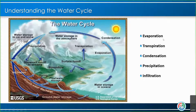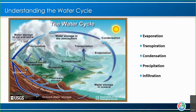Oftentimes you'll hear evaporation and transpiration talked about together — that's basically just the change from liquid water to water vapor. Evaporation is just from the water itself, and transpiration is when the plants lose water into the vapor phase. Then we have condensation, where you have the vapor going into the liquid phase — that's when you're seeing clouds, which will then lead to precipitation, which can be rain or snow or anything like that.